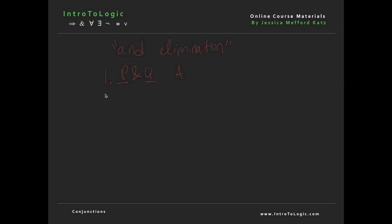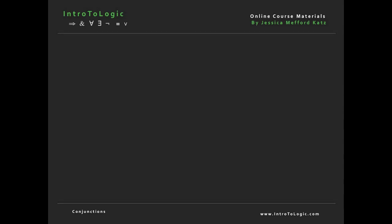So if I start with line one as my assumption — the conjunction P and Q — according to and elimination, I can take P away from line one and write 'and elimination'. And I can also take Q away from line one: Q, one, and E. The rule and elimination is also very intuitive — it says if we have an 'and' sentence, we can break each of the conjuncts into its own premise.